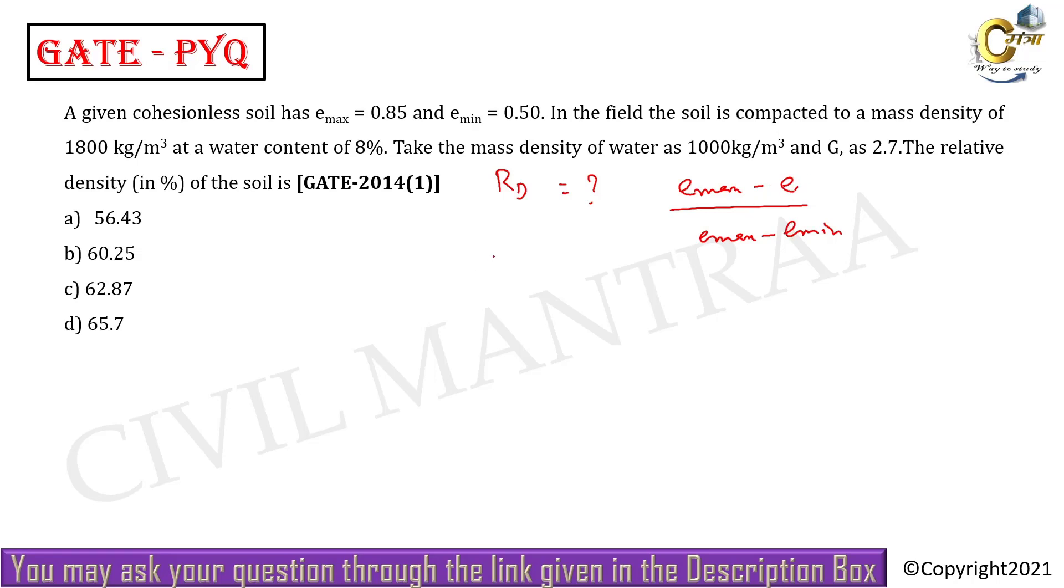You have to apply the formula gamma d equals G into gamma w by 1 plus e. Gamma d is 1800. Divide here by 1800, you have to add the value and calculate to get e equal to 0.62.